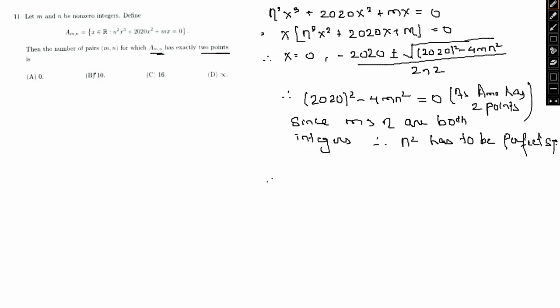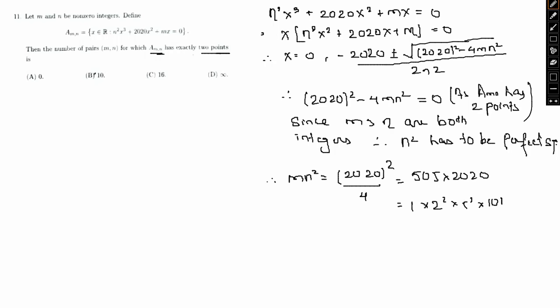From the discriminant condition, m·n² = 2020² / 4 = 505 × 2020. Breaking this into prime factors: 2020 = 2² × 5 × 101, so 505 × 2020 = 2² × 5² × 101².